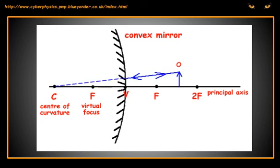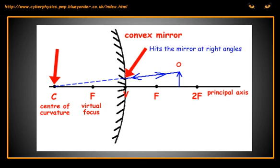The second ray we draw aims at the virtual centre of curvature of the mirror, the centre of the sphere the mirror was cut from. It is reflected back along its own path, because it hits the mirror normally, along the normal, at 90 degrees, giving an angle of incidence of 0, and therefore an angle of reflection of 0.